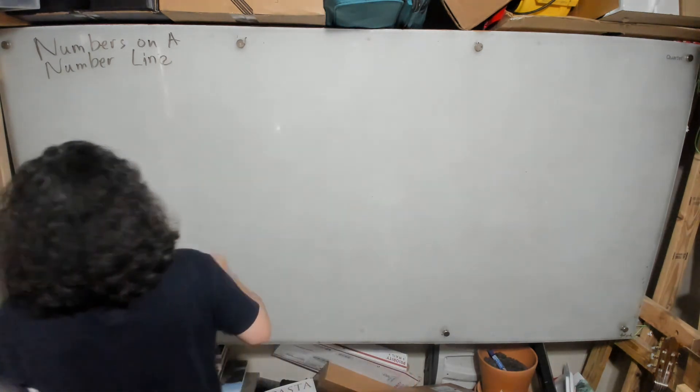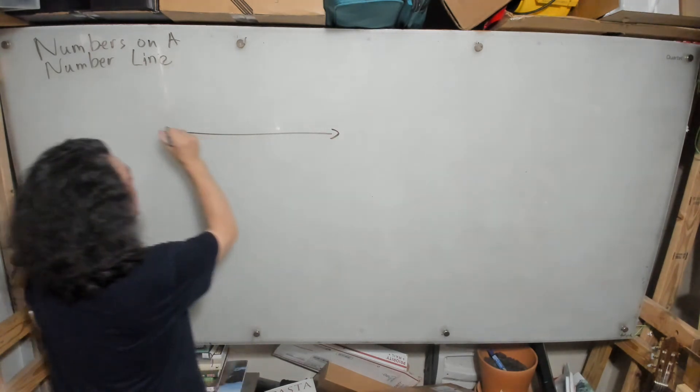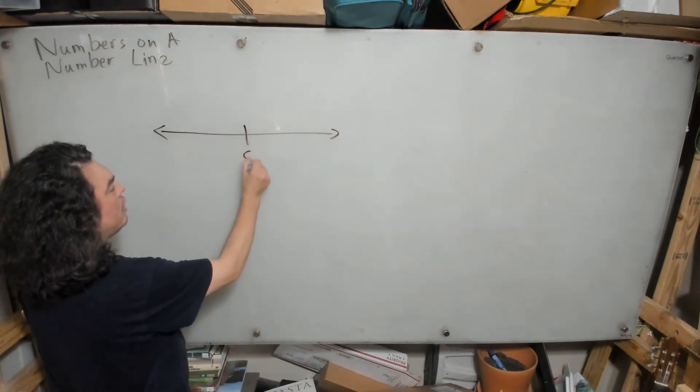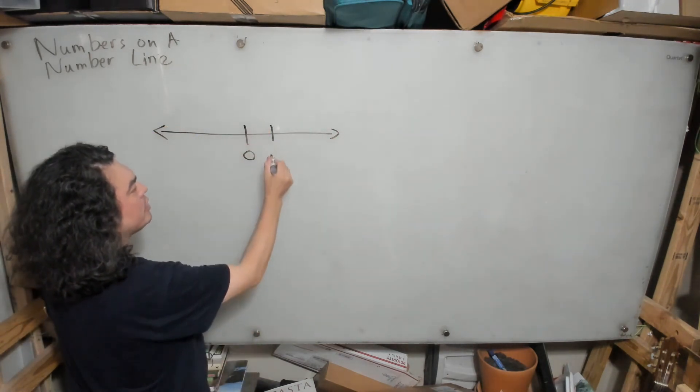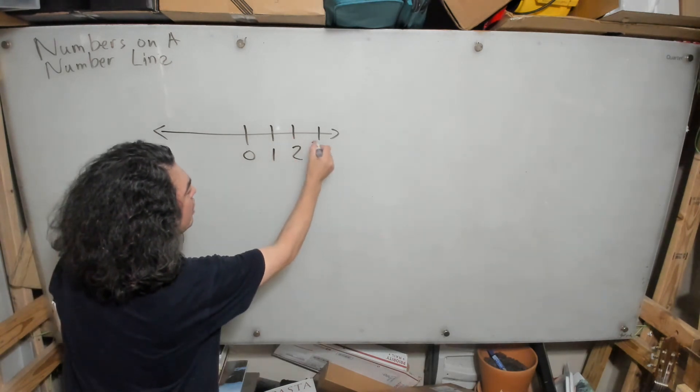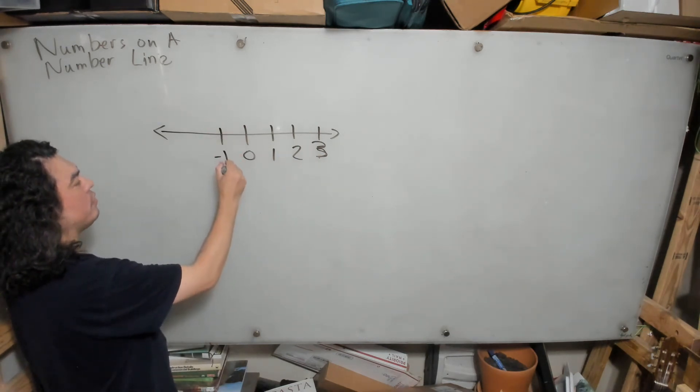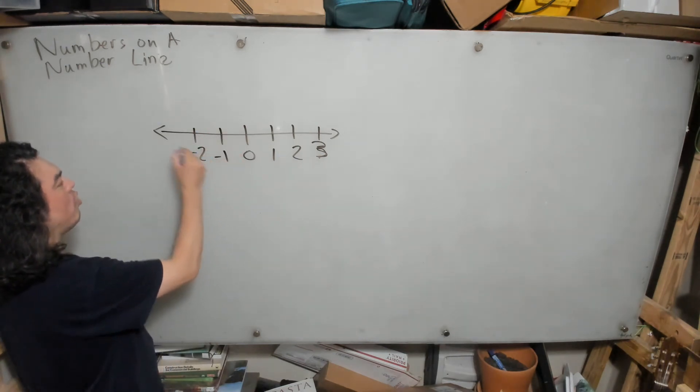We're going to represent that as follows: this is my number line. It's zero. I can represent the positive to the right, and you will see in all the diagrams that I ever do as far as the number line is concerned, that to the right I will draw the positive.